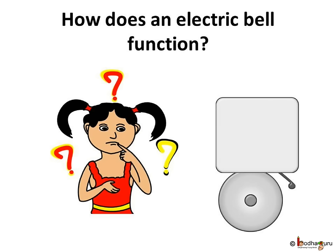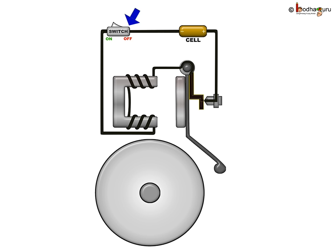Now that we are clear about the electromagnet, let us now understand how an electromagnet is used in the functioning of an electric bell. Let us see the simplified circuit of an electric bell with the switch in OFF position.